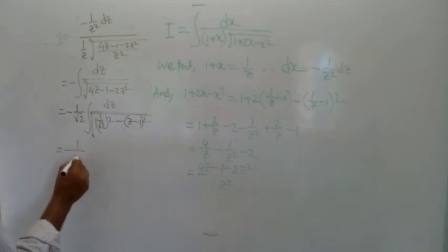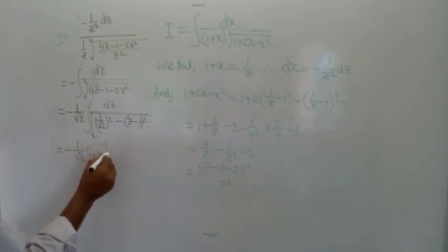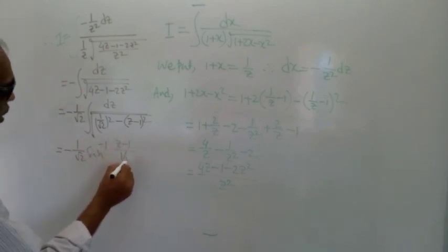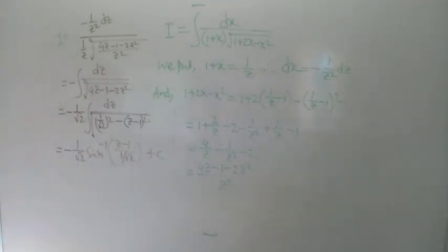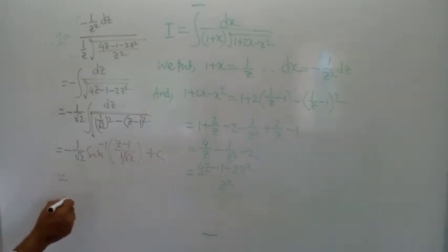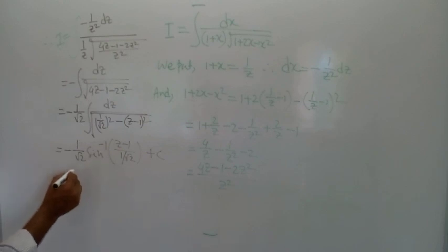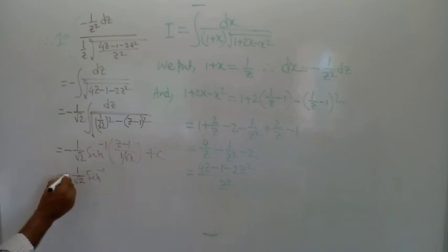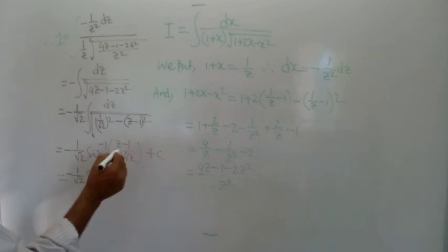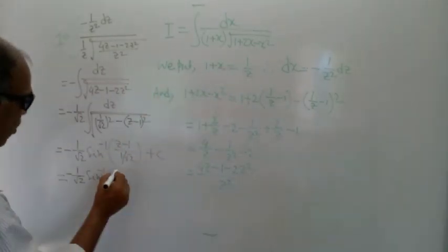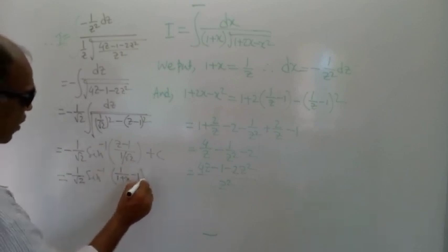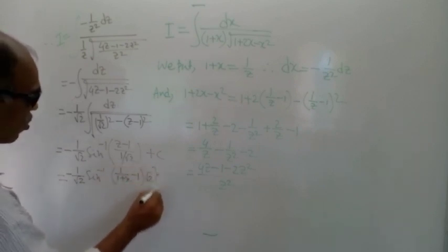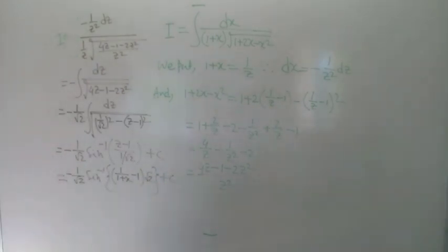The formula for this is now available. This is equal to minus 1 by root 2 times sin inverse of (z minus 1 by root 2) plus c, where c is the constant of integration. Now substituting back, z is equal to 1 by (1 plus x), so we get sin inverse of (1 by (1 plus x) minus 1) divided by root 2, plus c.